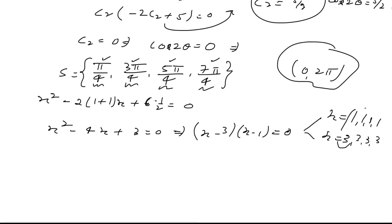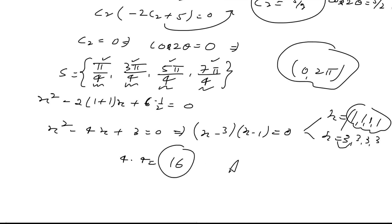Question mein kaha gaya ki in sabhi roots ka summation evaluate karna hai. Since set S mein 4 values of theta hain aur har ek ke liye same quadratic equation banti hai with roots 1 and 3, toh summation = 4×1 + 4×3 = 4 + 12 = 16. Yeh is question ka final answer hai.